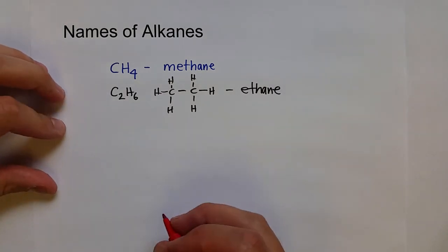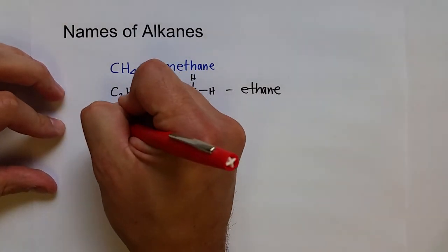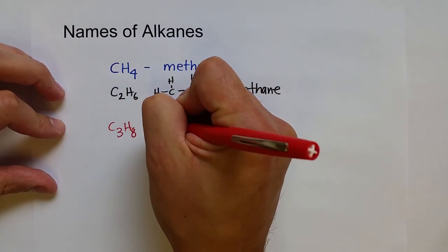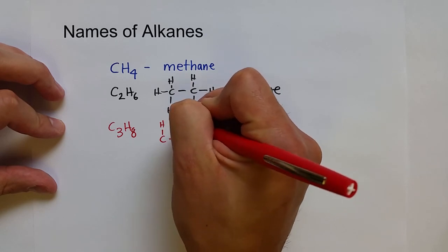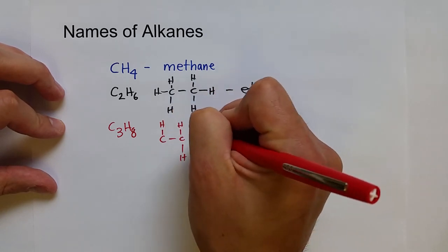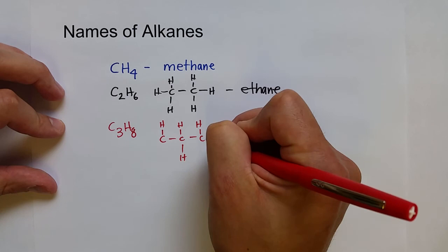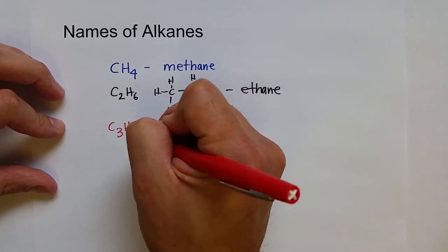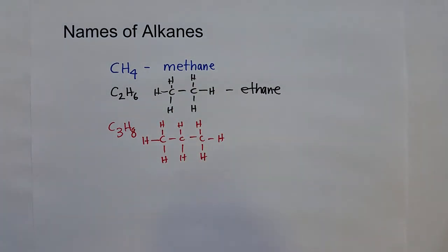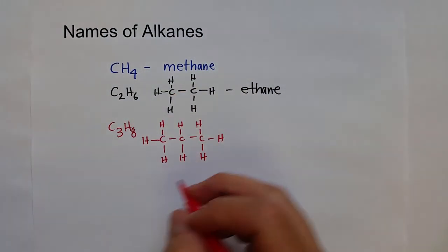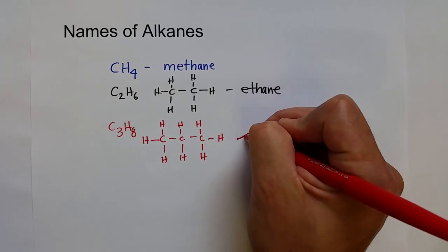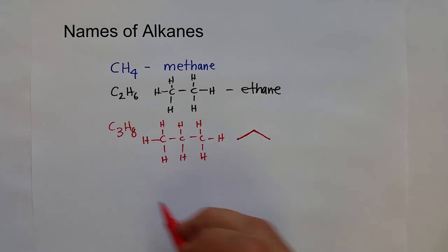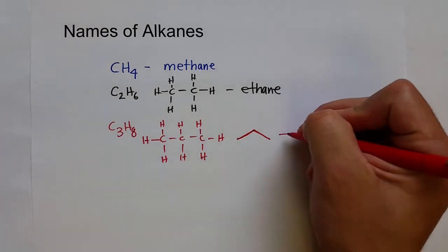The next hydrocarbon is propane, so that would be C3H8 or CH3CH2CH3. And then once you get past ethane, you can also start using the skeletal formula to start drawing these. So propane would look like this, with one inflection point — one, two, three carbons — and then we can figure out how many hydrogens are on that. So that's propane.